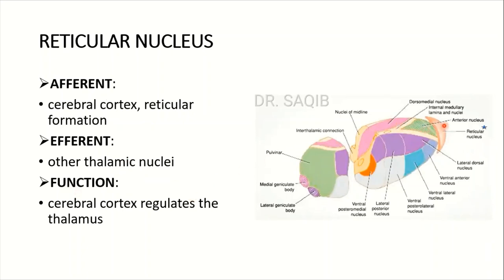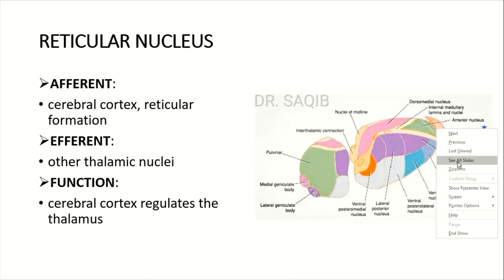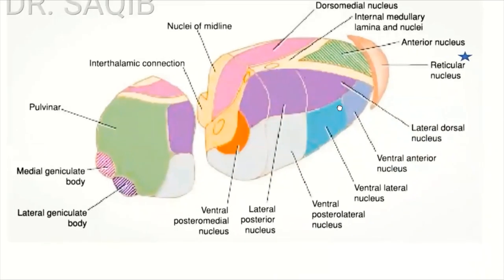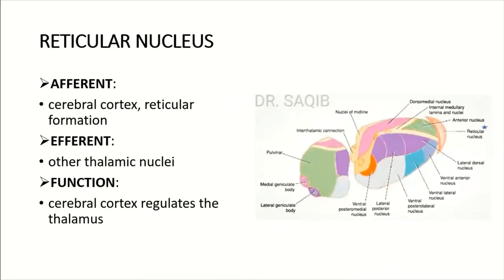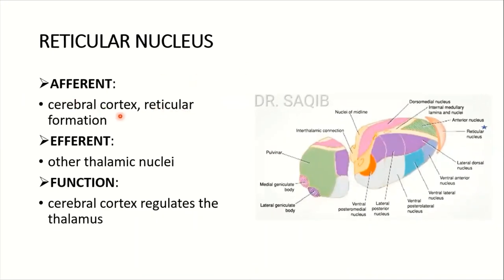The reticular nucleus: its afferents come from the cerebral cortex and the reticular formation, as the name suggests. Its efferents go to other thalamic nuclei. The function is that the cerebral cortex regulates the thalamus via this nucleus.